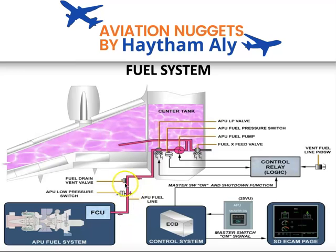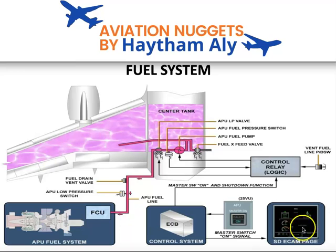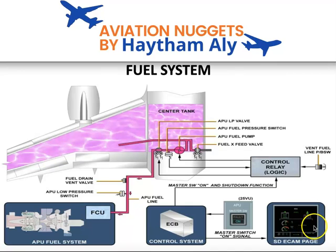So fuel is going along the line, and at the entry of the fuel control unit, if the pressure of the fuel reduces to 15.8 PSI and the APU is operating at 7% RPM and above — which is considered on-speed operation — the APU low pressure switch will indicate 'fuel low pressure' on the ECAM.